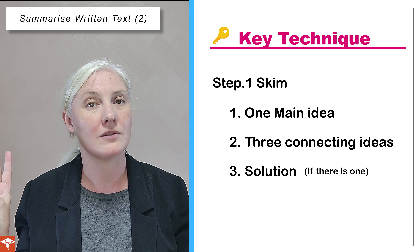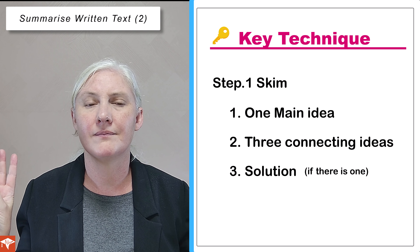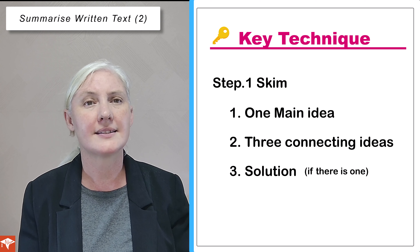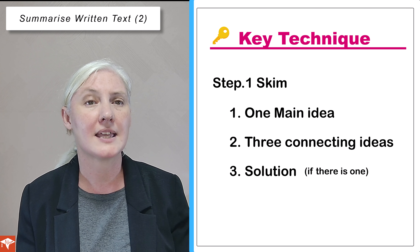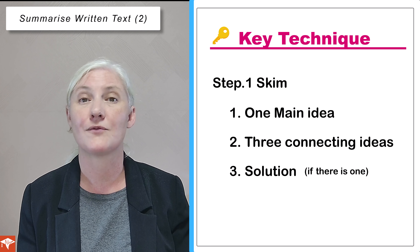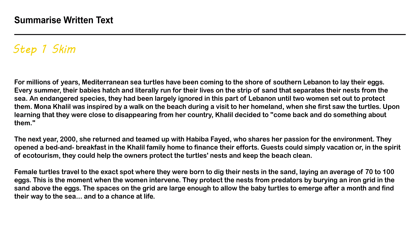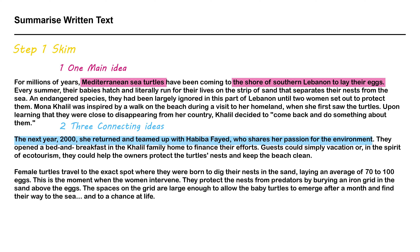Okay, step 1. So let's skim for, first, one main idea; second, about three connecting ideas; and third, one solution, if there is one. First, let's skim for the main idea by finding the key points from the first sentence of the first paragraph. Mediterranean sea turtles lay their eggs on the shore of southern Lebanon. For now, that sentence is okay.